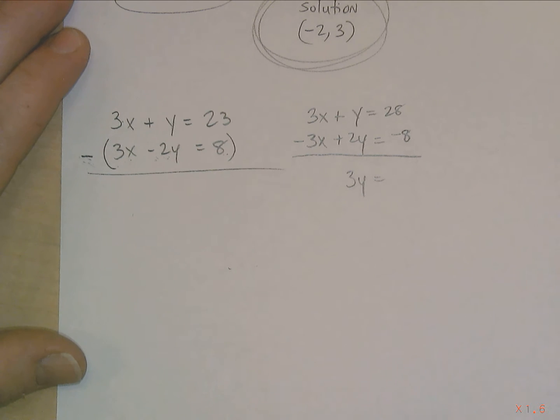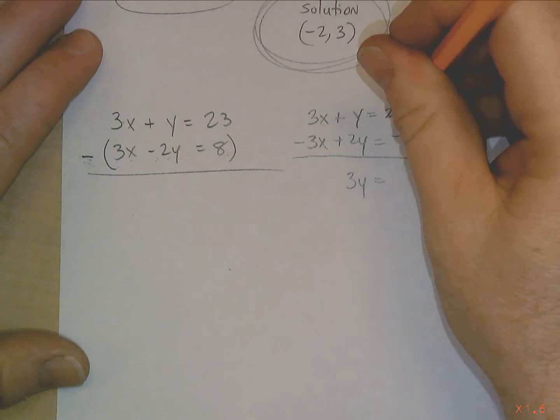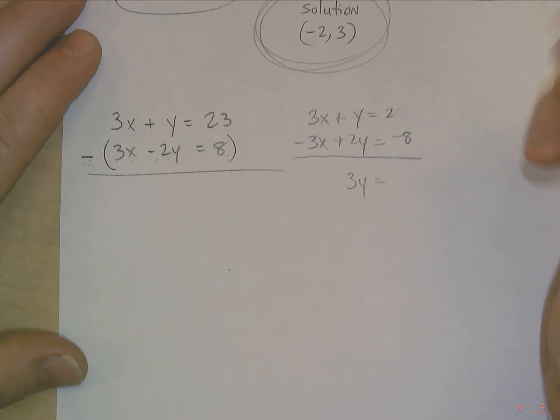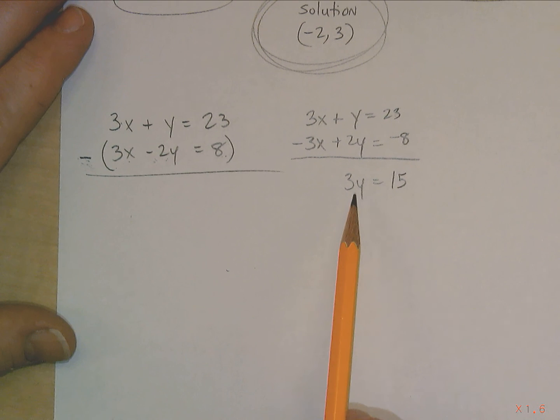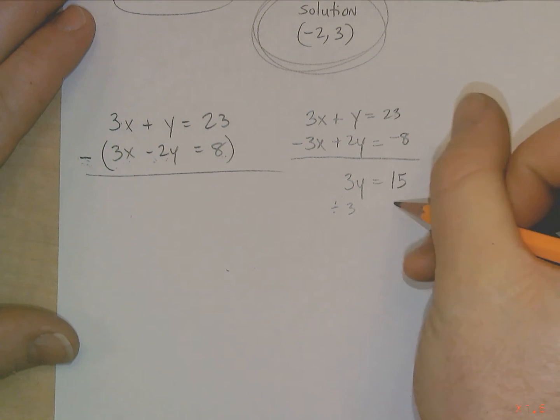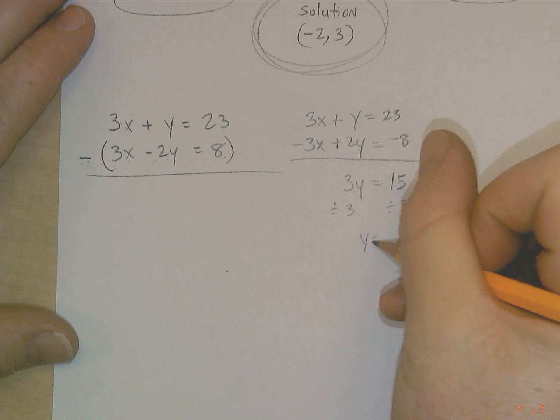Now I can solve it. This becomes 0, this becomes 3y. This becomes 20, which makes no sense because that's 23. My brain is fried apparently. Okay, that's 15. My bad. All right, I make mistakes. I make a lot of them. Okay, anyways, so we solve for y. We divide both sides by 3. This is just a one-step equation. y equals 5.